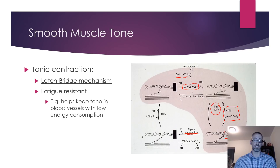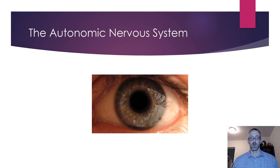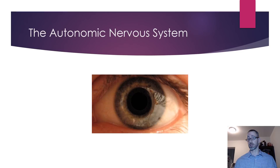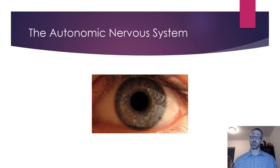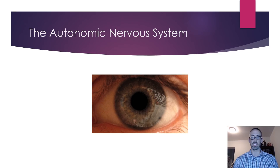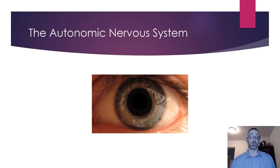This latch bridge mechanism helps maintain tone in blood vessels, the digestive tract, and so on, with very little energy consumption. Without it we would have to consume far more energy to maintain that tension. Now we turn to the autonomic nervous system. As already alluded to, smooth muscle is innervated by the autonomic nervous system, which has two parts — parasympathetic and sympathetic — that typically have opposite actions on the organs they innervate.